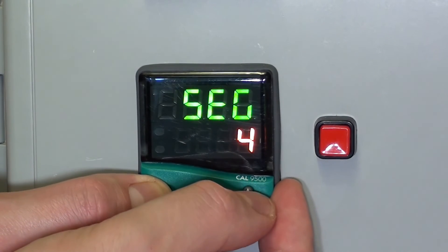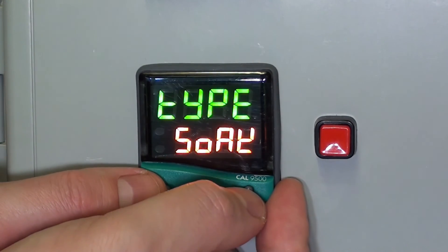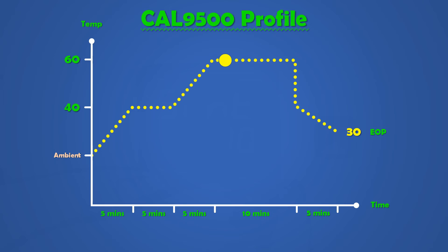Segment 4. Again, we want it to soak. Type is soak for 10 minutes this time. There we go, 10.